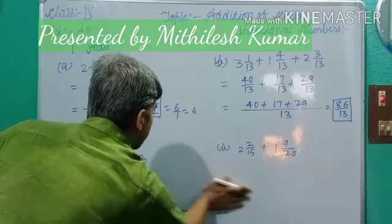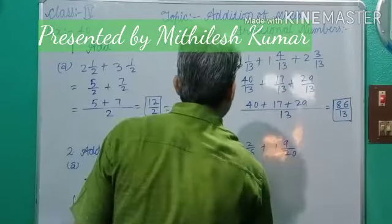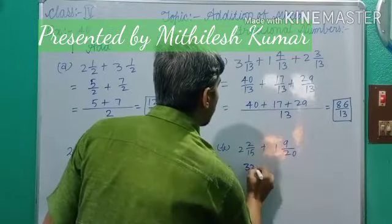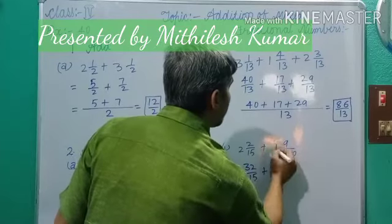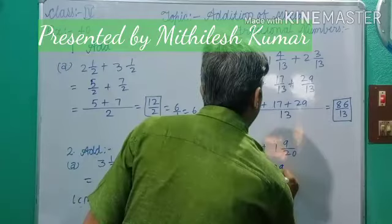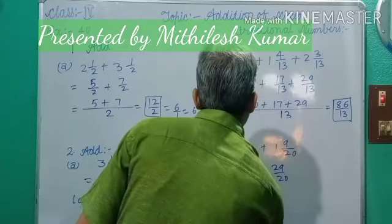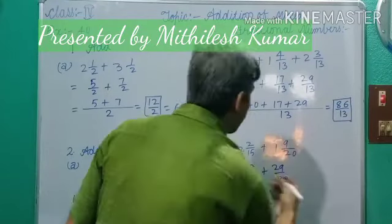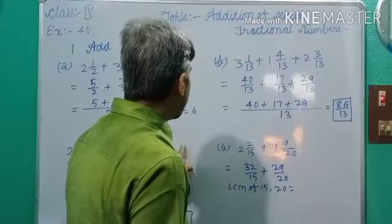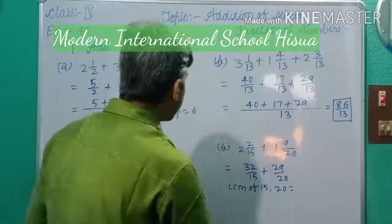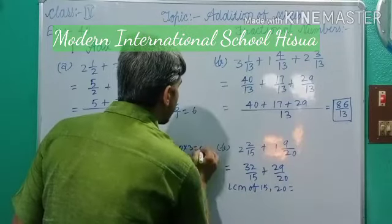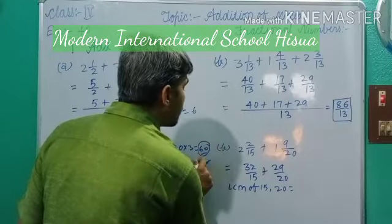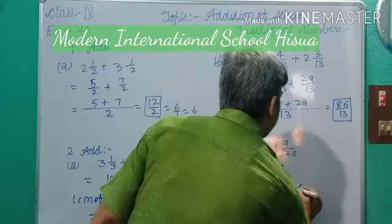Now dear students, here same process. First, convert into Improper Fractions: 15 times 2 is 30, plus 2 gives 32 by 15. Plus 1 by 20. Plus 29 by 20. Dear students, LCM of 15 and 20. Read the table of 20: 20, 40, 60. 60 is the first number divisible by both 15 and 20. So their LCM is 60. You can find it orally for small numbers.